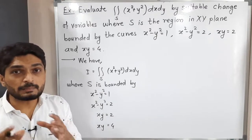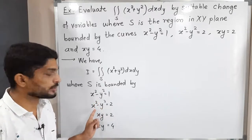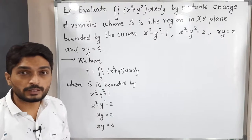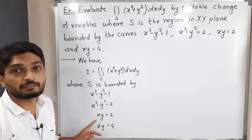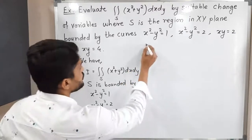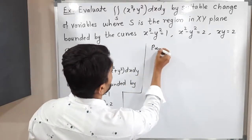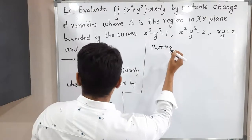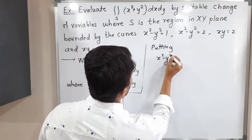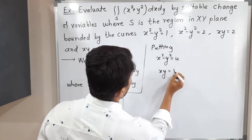Did you notice anything common or any pattern? Yes — in the first two equations, the left-hand side has x² - y², and for the last two remaining equations we have xy on the left-hand side. So my substitution will be: let u = x² - y² and v = xy.